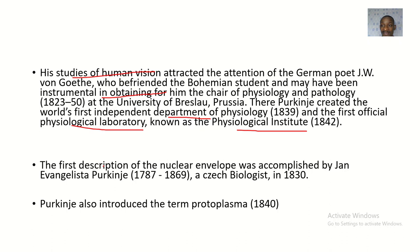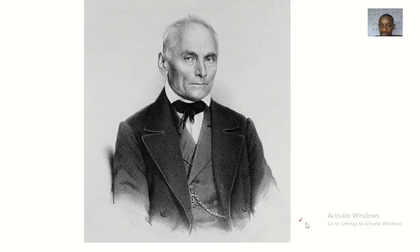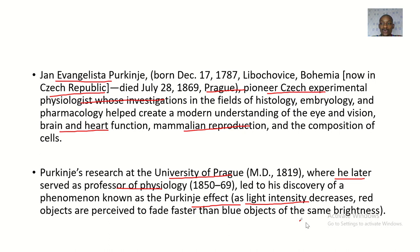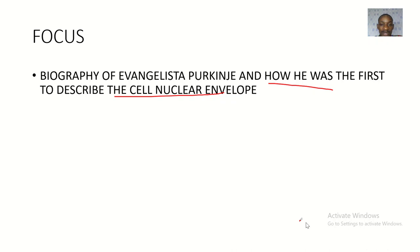The first description of the nuclear envelope was accomplished by Jan Evangelista Purkinje, a Czech biologist, in 1830. Purkinje also introduced the term protoplasm in 1842. As you can see, he made a whole lot of discoveries, so it is fitting to call this lecture the biography of Jan Evangelista Purkinje and his contributions to science.